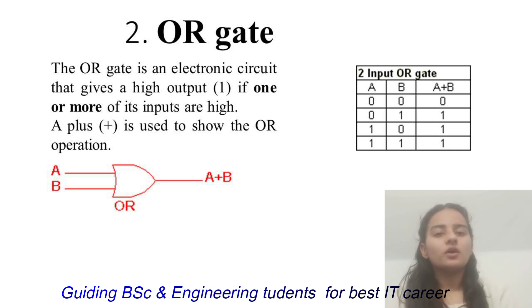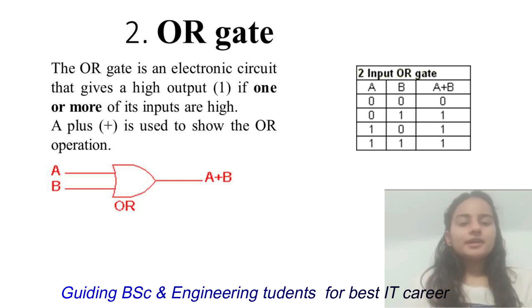So if you have seen the AND gate, you can see the truth table for OR gate. Third, NOT gate.